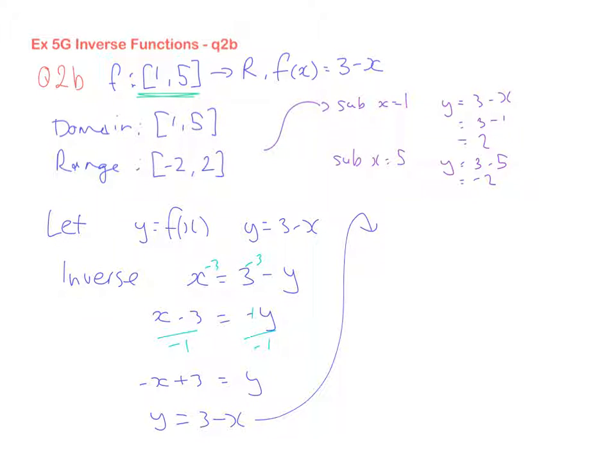So now, my inverse function, write it back as function form, f to the negative 1 of x is going to be 3 minus x. If you note, it's exactly the same as what we've got at the top. So our inverse function just happens to be exactly the same as our original function.